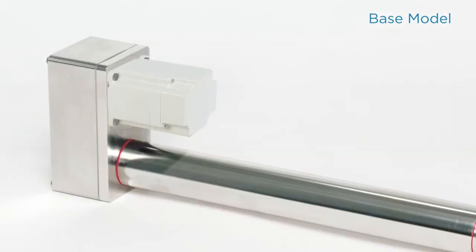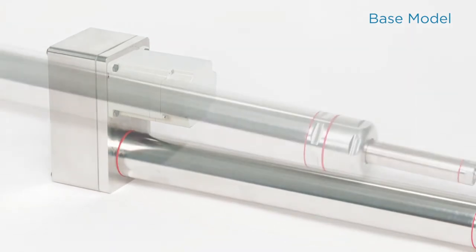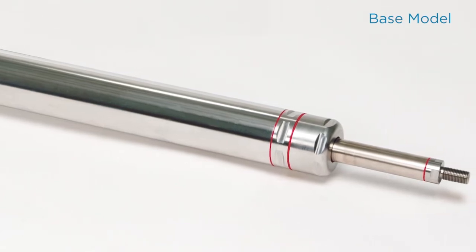The base model is constructed for applications in high-pressure, high-temperature washdown environments. Its strength comes from its 300-grade stainless steel body and rod with aluminum head and motor mount.